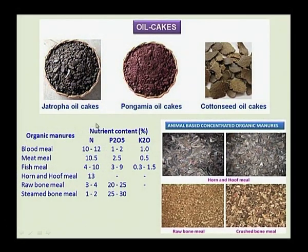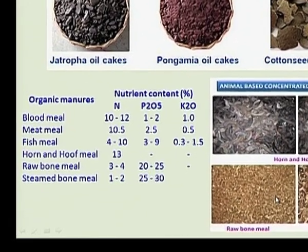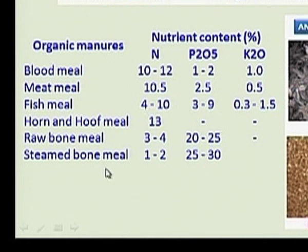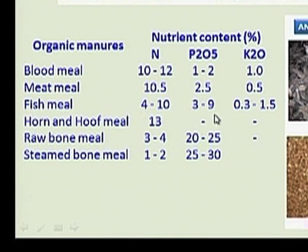Some animal-based concentrated organic manures include blood meal, which has 10 to 12 percent nitrogen, 1 to 2 percent phosphorus, and 1 percent potassium. Meat meal has around 10 percent nitrogen, 0.5 percent potassium, and 2.5 percent phosphorus. Fish meal has 4 to 8 percent nitrogen, 3 to 9 percent phosphorus, and 0.3 to 1.5 percent potassium. Raw bone meal, steamed bone meal, and horn and hoof meal are also used as concentrated organic manures.